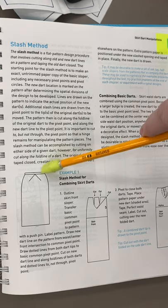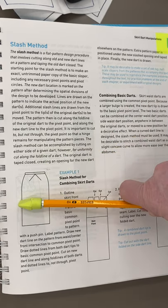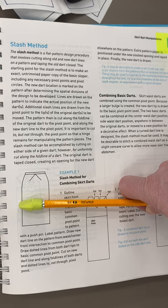If we wanted a center seam here, then my drawing would just reflect that. If I wanted to use a facing instead of a waistband, my drawing would reflect that. If I wanted a shorter skirt instead of a longer one, my drawing would reflect that.